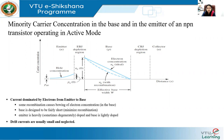Considering electrons injected from the emitter into the P-type base, they are minority carriers. Because the base is very thin, in steady state the excess minority carrier concentration — the electron concentration in the base — has almost a straight-line profile, as shown in the diagram. It is denoted as NP, with the concentration highest at the emitter side and lowest at the collector side.